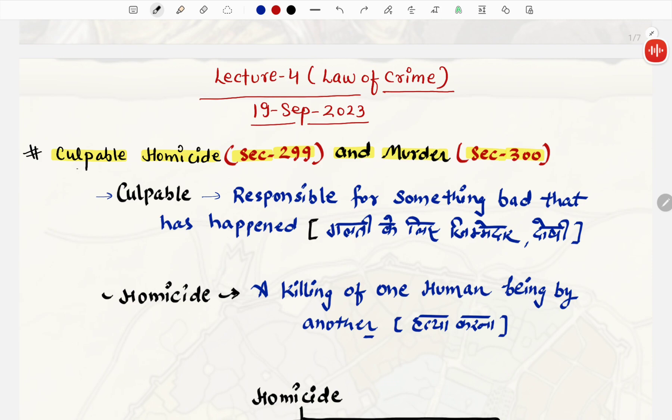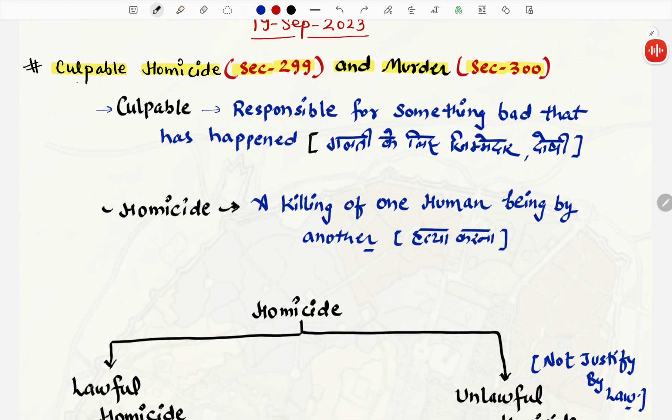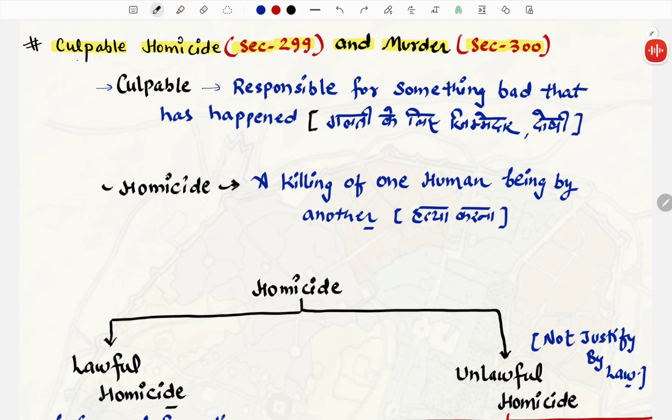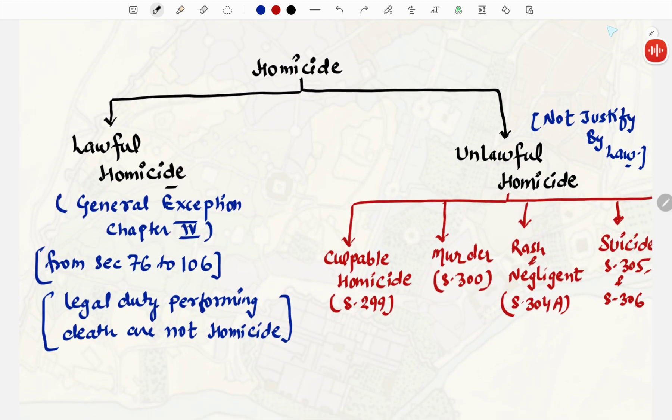In Lecture 3, we discussed understanding the major jargon of the Law of Crime. In this lecture, we're doing the same thing, just like Culpable Homicide and Murder. What is the difference between Culpable Homicide, which comes under Section 299 of IPC, and Murder, which comes under Section 300 of IPC? First, we have to understand what you mean by Culpable. Culpable is just like being responsible for something bad that has happened. Kisi galti ke liye kisi ko jimmedar banana, kisi ko doshi tahrana is called Culpable. Homicide means a killing of one human being by another.